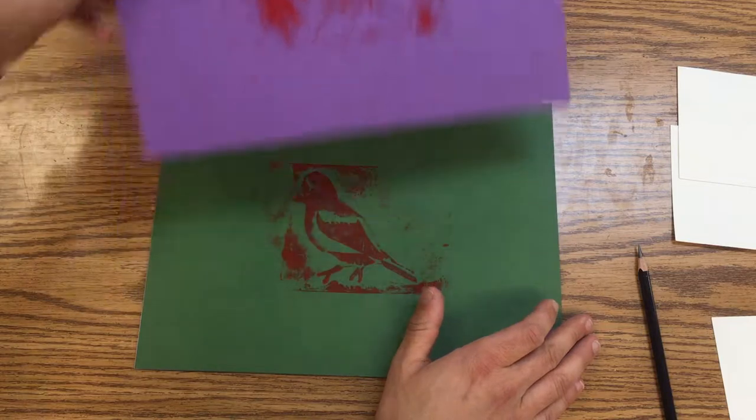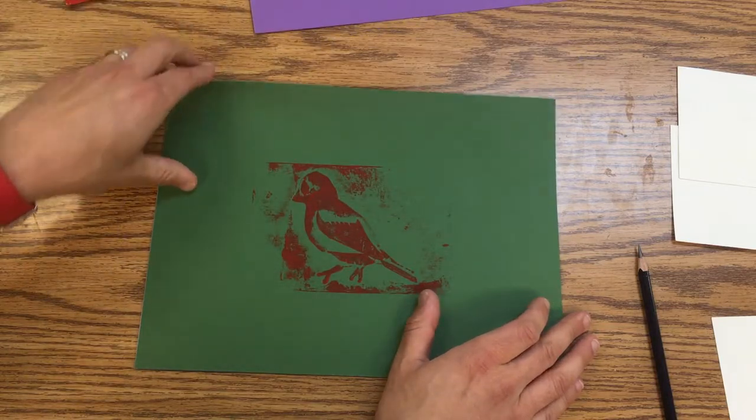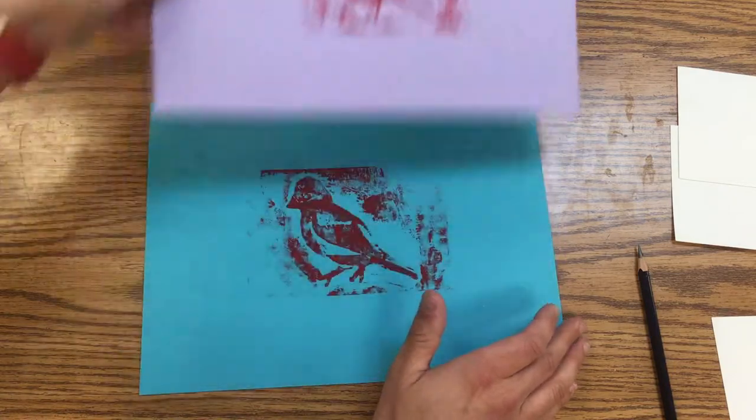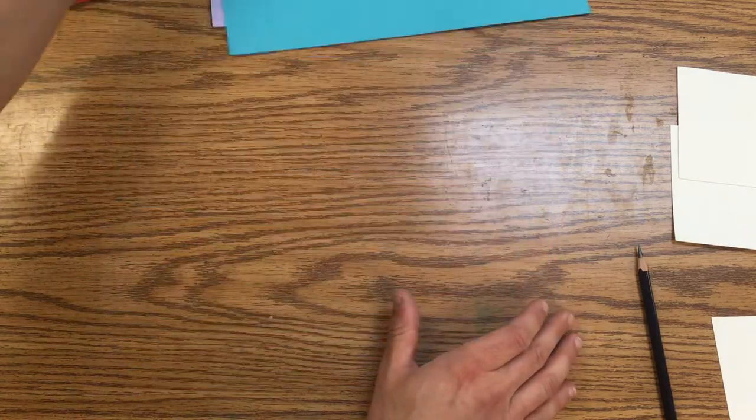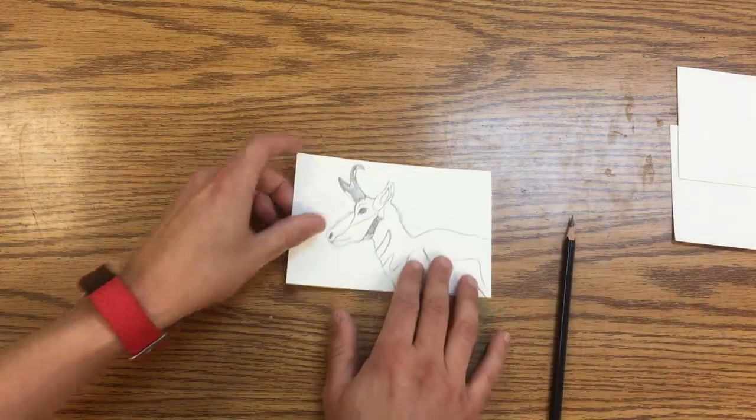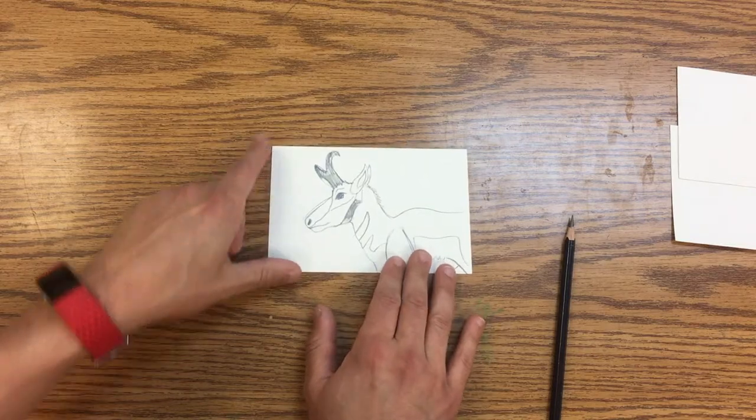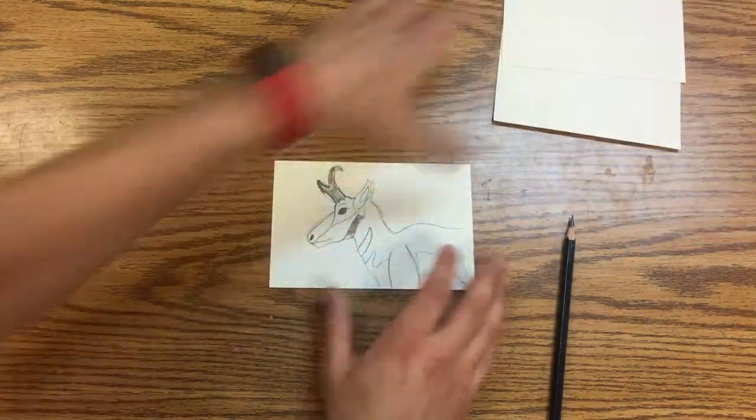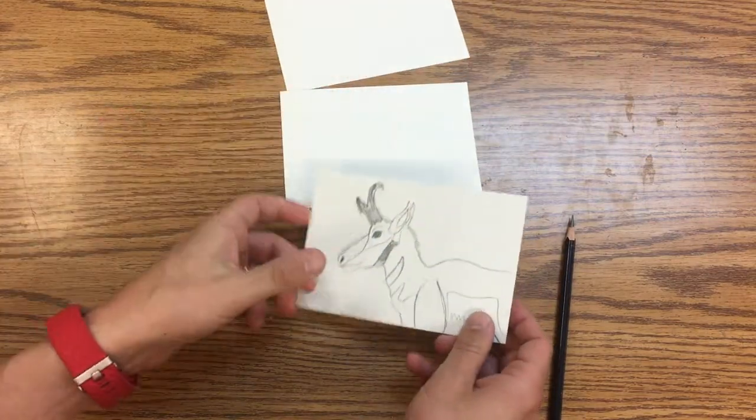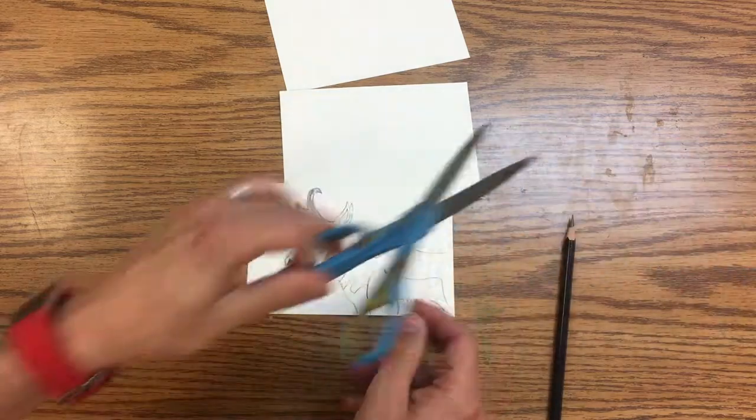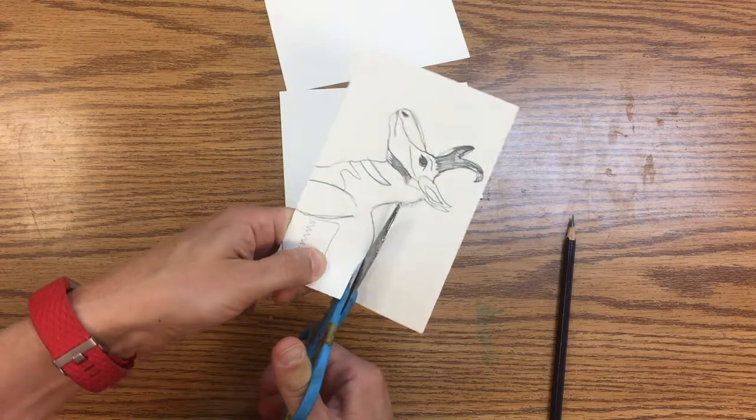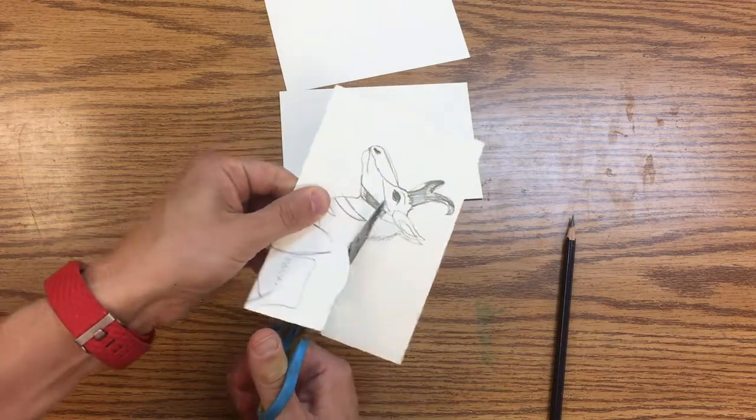I did this American goldfinch here on different colors of paper. So first of all, you're going to have drawn your animal on one of these cards. This is a thick piece of cardboard, and then I've got these other two that are cut to the same size.